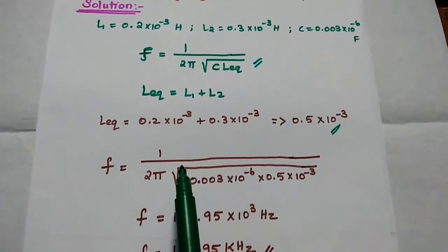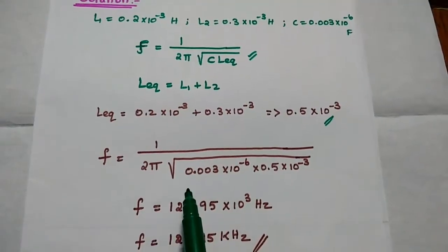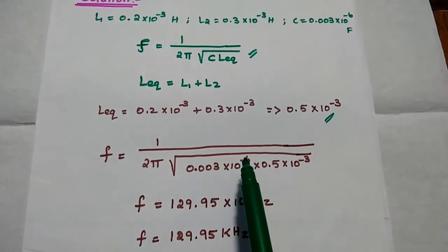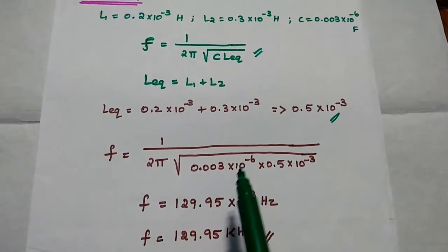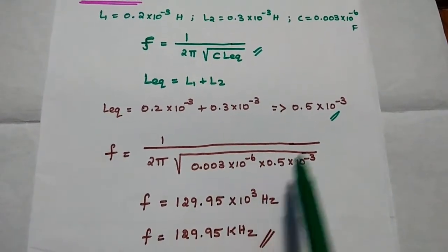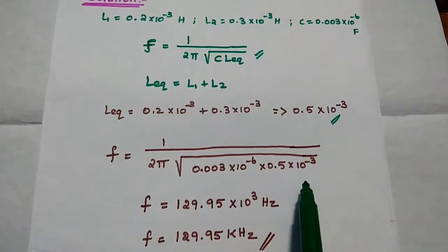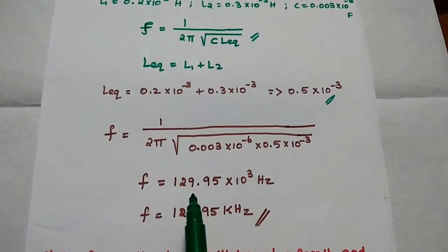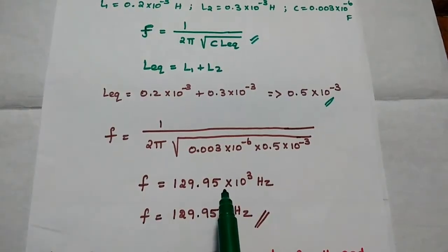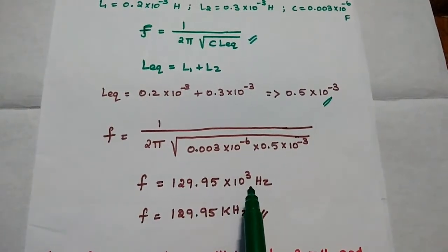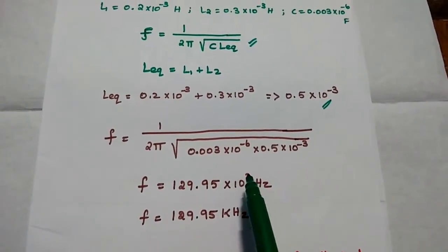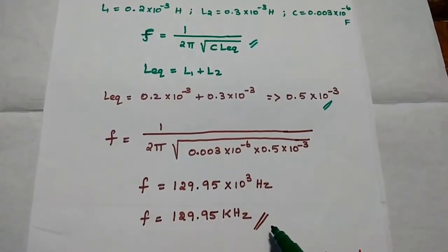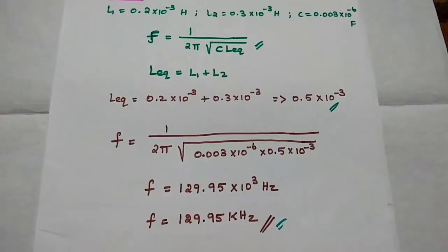F is equal to 1 divided by 2π times the square root of 0.003 into 10 to the power minus 6 multiplied by 0.5 into 10 to the power minus 3. We can get the value as 129.95 into 10 to the power 3 Hertz, where 10 to the power 3 means kilo. So the answer is 129.95 kHz.